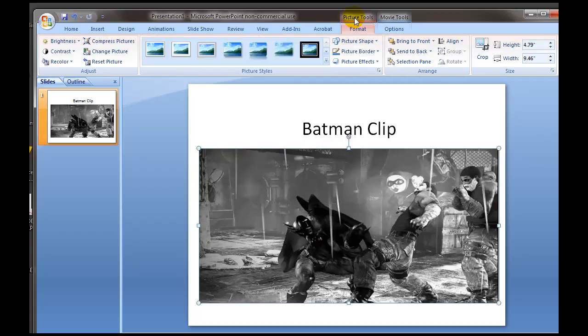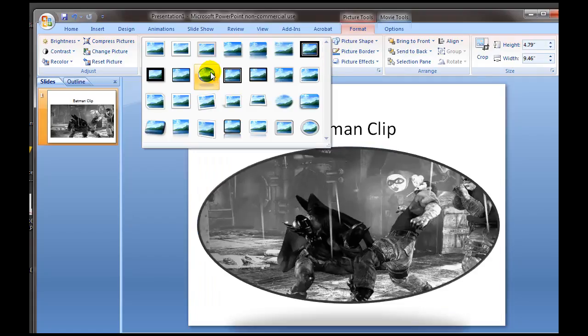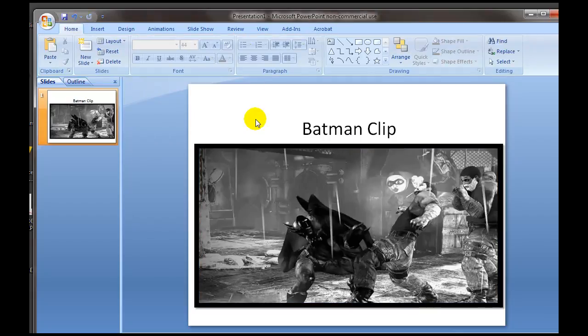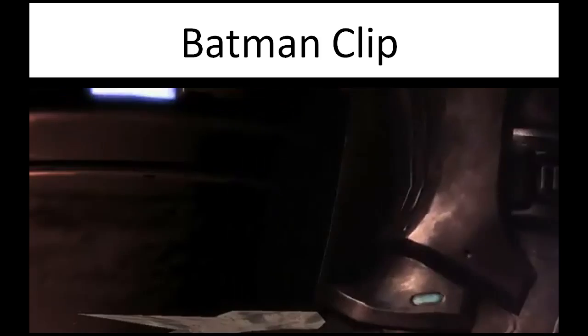If you want to add a frame or border around the clip, go up to the area called 'Picture Tools' where you have a number of options — you can make it round, give it a black border, and it looks pretty cool with a black border. Now let's see if it plays as a PowerPoint presentation. I've gone into full-screen PowerPoint — you can see the title and part of the video clip. If I click on it, it begins playing the Batman clip.